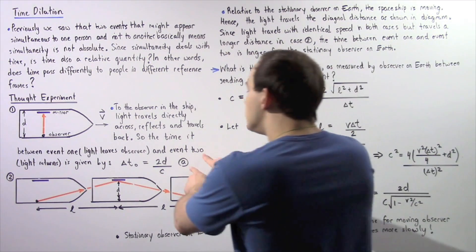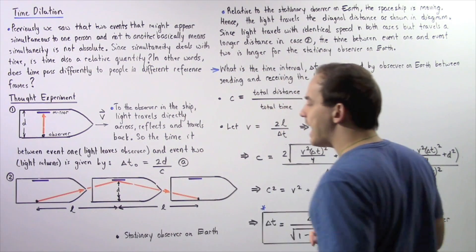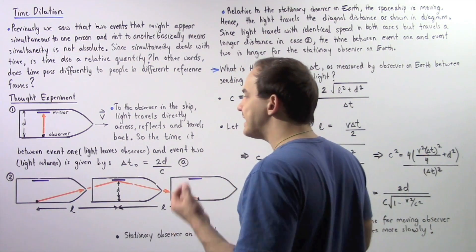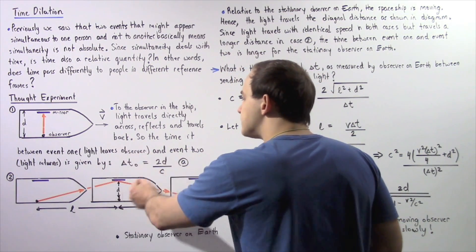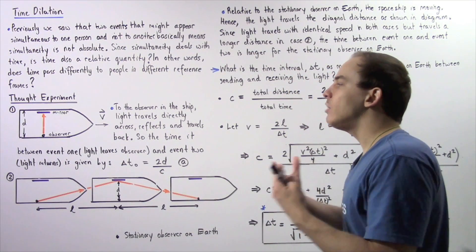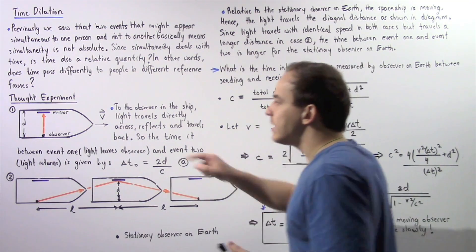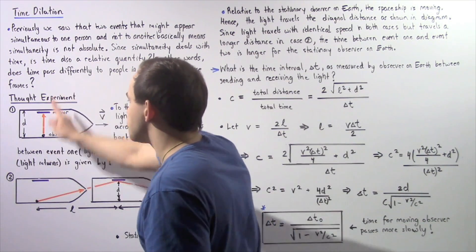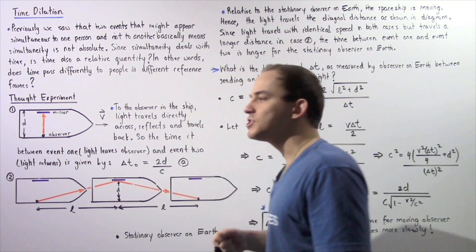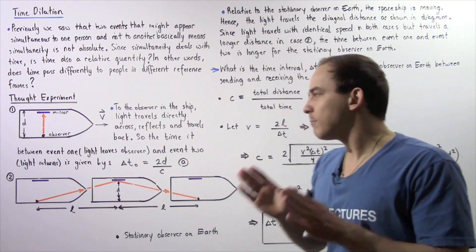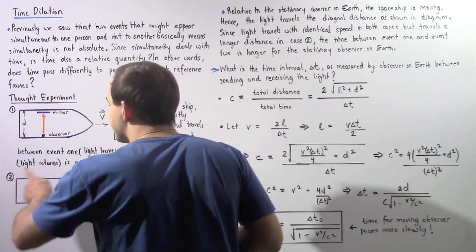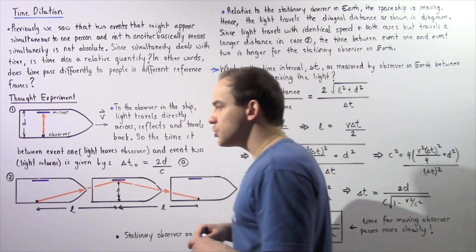Let's call this equation A. Equation A gives us the quantity of time telling us how long our ray of light travels there and back, and this is known as the proper time. Now let's move on to case number two.